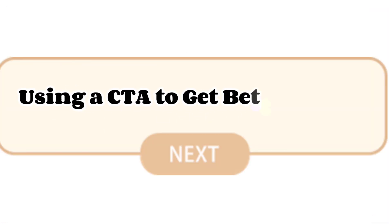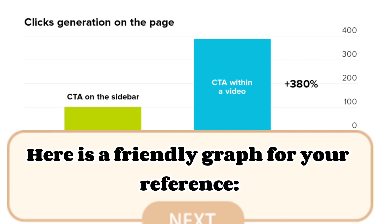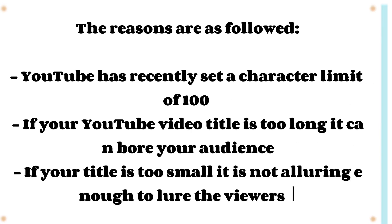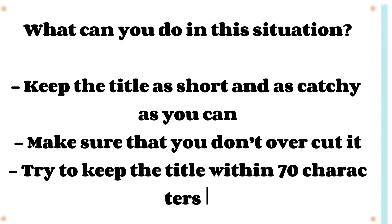Tip 6: Using a CTA to Get Better Views. A powerful call-to-action (CTA) is going to up your game if implemented correctly. Here is a friendly graph for your reference. Tip 7: Length of Your Title Matters. YouTube has recently set a character limit of 100. If your title is too long it can bore your audience; if it's too short it won't lure viewers. Keep the title short and catchy, and try to stay within 70 characters.